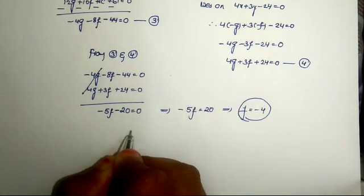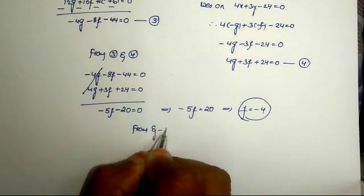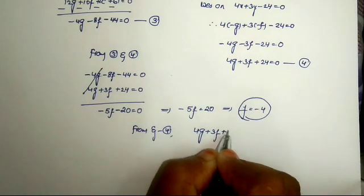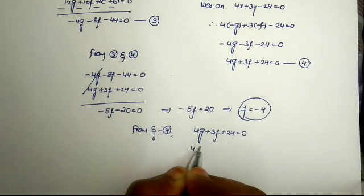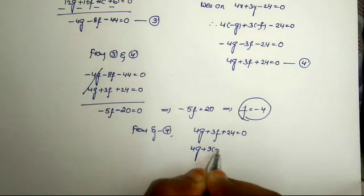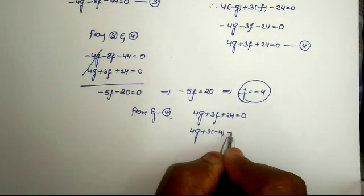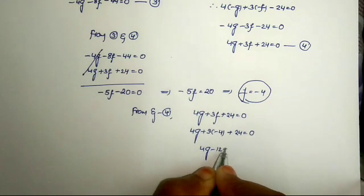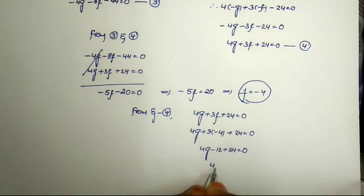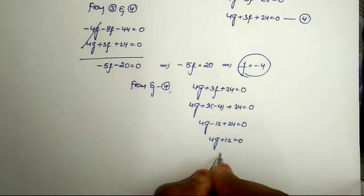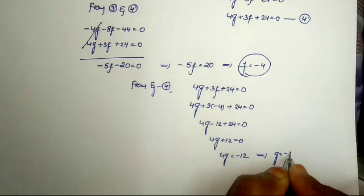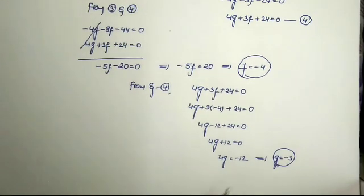Now substituting f = -4 into Equation 4 to find g. Equation 4 is 4g + 3f + 24 = 0. Replacing f: 4g + 3(-4) + 24 = 0, giving 4g - 12 + 24 = 0, so 4g + 12 = 0, meaning 4g = -12. Therefore g = -3.